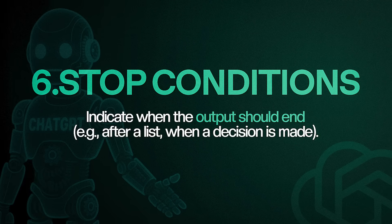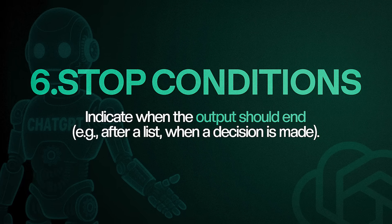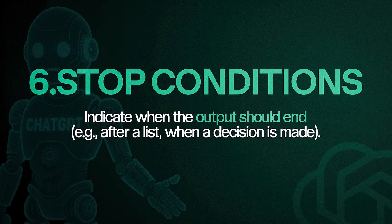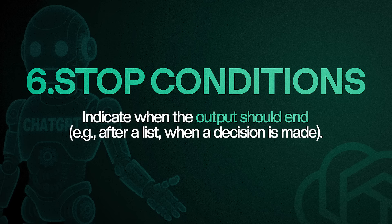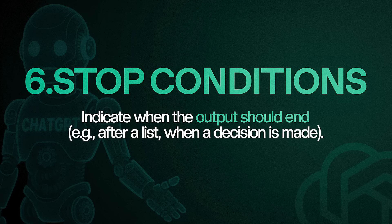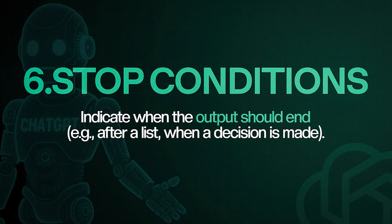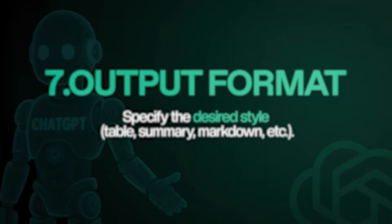Number six is the stop condition. This is where you specify exactly when you want GPT-5 to stop researching and give you the output. Maybe after it has come up with five examples, or once it has made a long enough list, it can then stop researching about the topic.